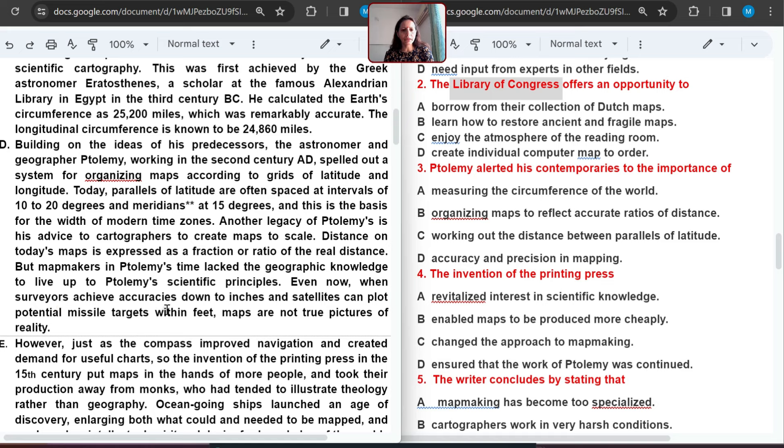Even now when surveyors achieve accuracy. B and D are almost same options. But alerted about accuracy and precision in mapping. I think B will come with that. Achieve accuracy, satellites can plot - I think B will come. Or if you think D, then you can comment. Then B is the answer.